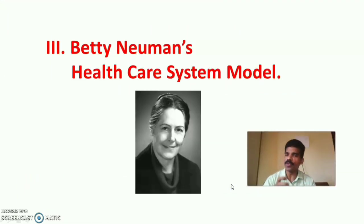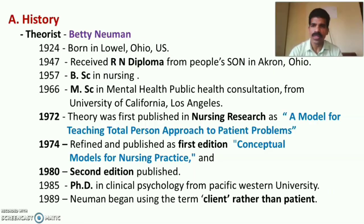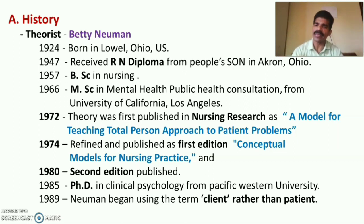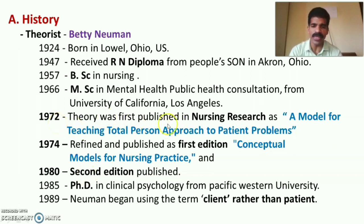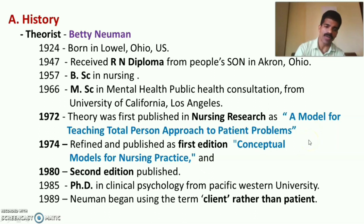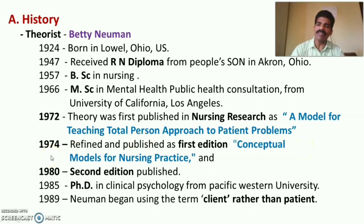Let us now discuss Betty Neuman's Health Care System Model in detail and apply it in community health nursing. The theorist Betty Neuman was born in the United States. She completed her nursing diploma in 1947, her BSN in 1957, and her MSc in Nursing in 1966. In 1972, she introduced her theory, first published in nursing research as a model for teaching the total person approach to patient problems. In 1974, she refined it and published the first edition as a conceptual model for nursing practice.